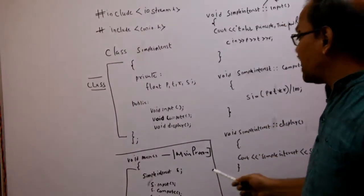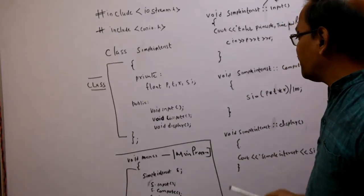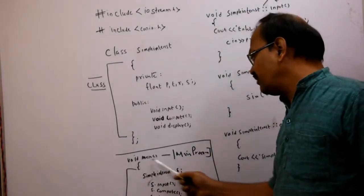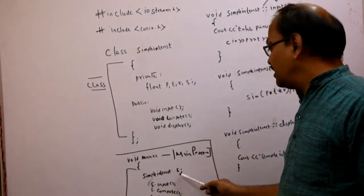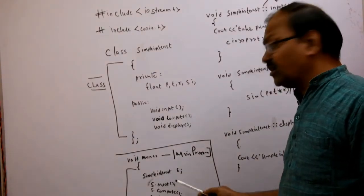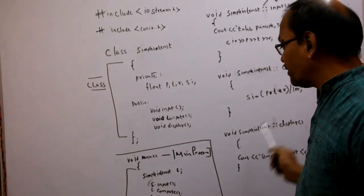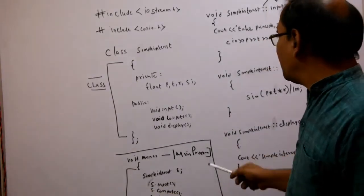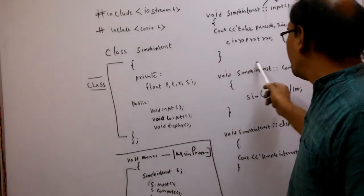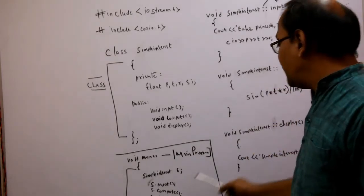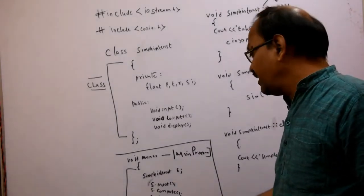To run all these member functions, we must have a main program to call them. We write the main program: simple_interest is the class name, and we create an object called S. We use S.input — this calls the input member function; S.compute — this calls the compute member function; S.display — this calls the display member function. When writing in Turbo C, we also write getch().